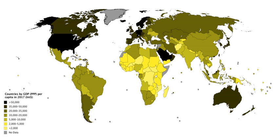GDP does not include several factors that influence the standard of living. In particular, it fails to account for externalities — economic growth may entail an increase in negative externalities not directly measured in GDP; increased industrial output might grow GDP but any pollution is not counted. Non-market transactions are excluded — activities not provided through the market, such as household production, bartering of goods and services, and volunteer or unpaid services. GDP also omits non-monetary economies where no money comes into play at all, resulting in inaccurate or abnormally low GDP figures.